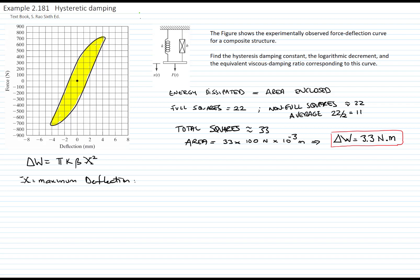As you see, we can read that value. It will be the top tip or the bottom tip of our hysteretic loop, and it's 4.3 millimeters, or 4.3 times 10 to the negative 3 meters.